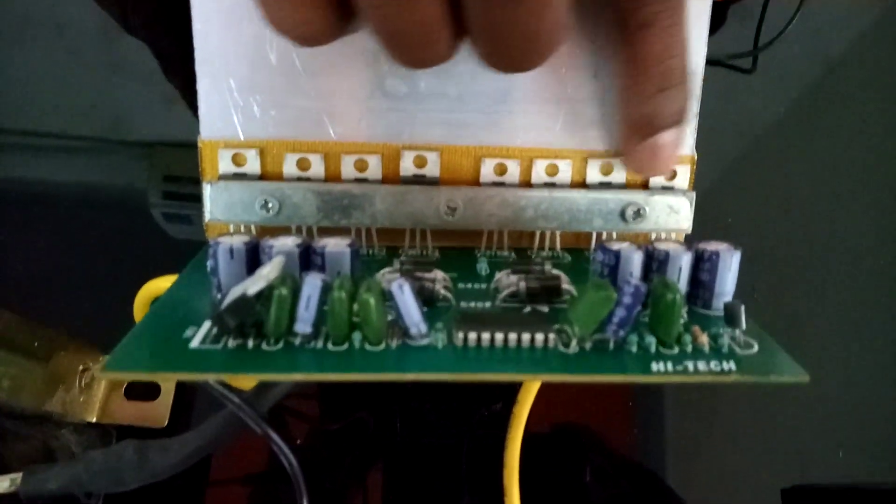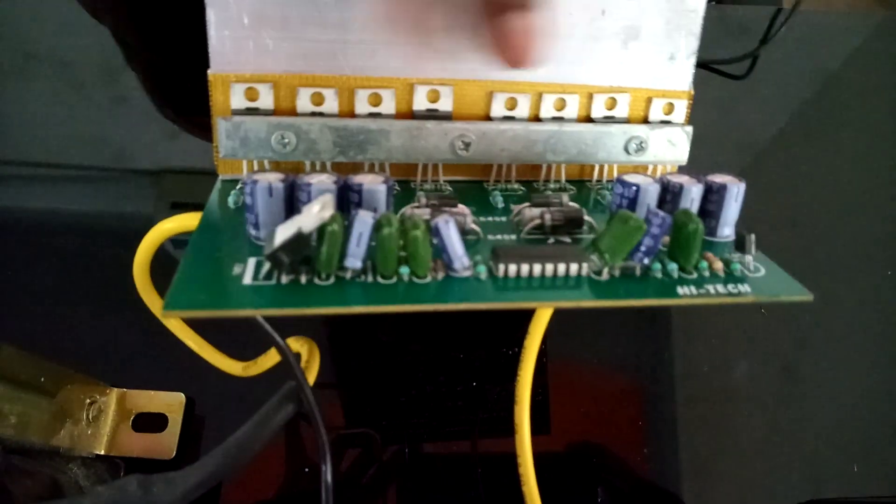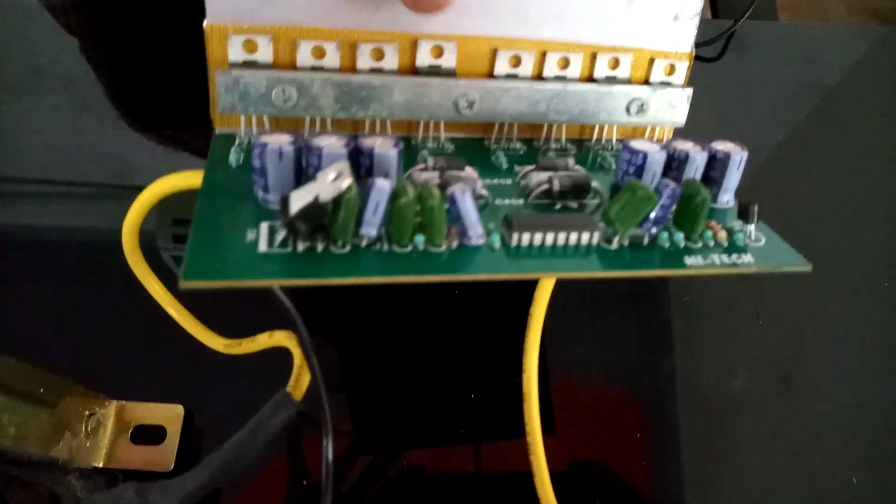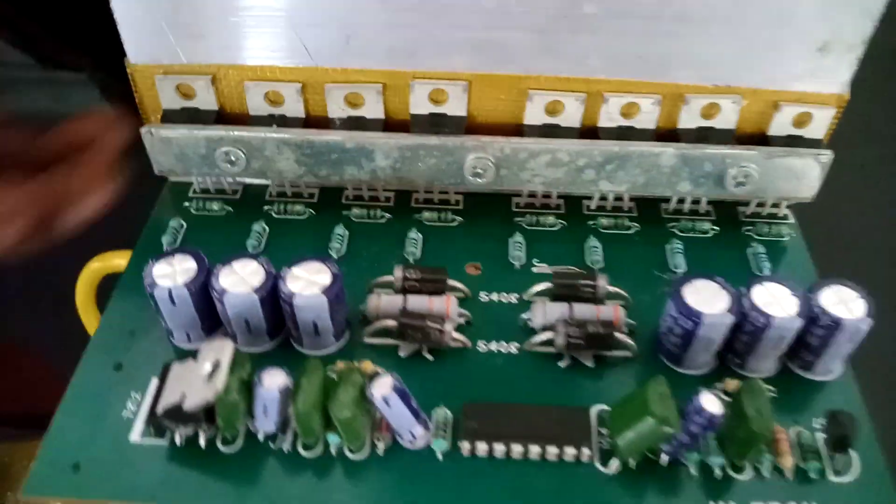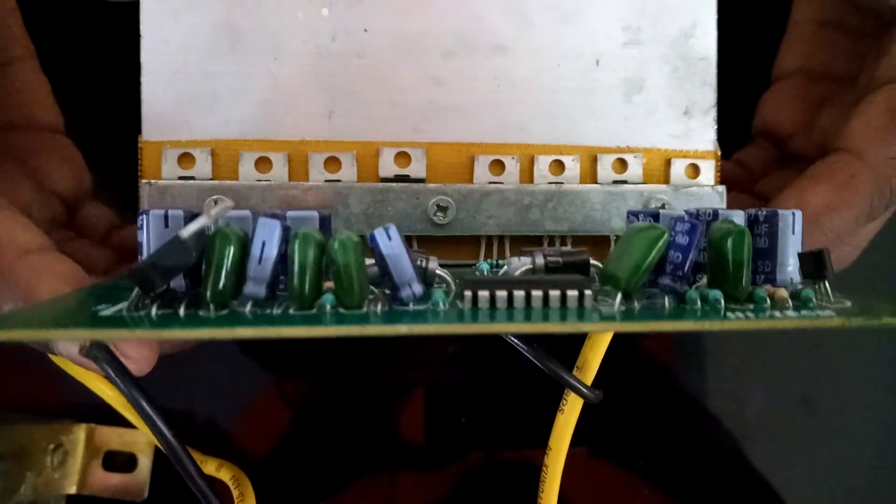This is the right hand side MOSFET and this is the left hand side MOSFET. This is the switching component. This is the 3525 switching device. This board is ready-made in the market for the square wave inverter.